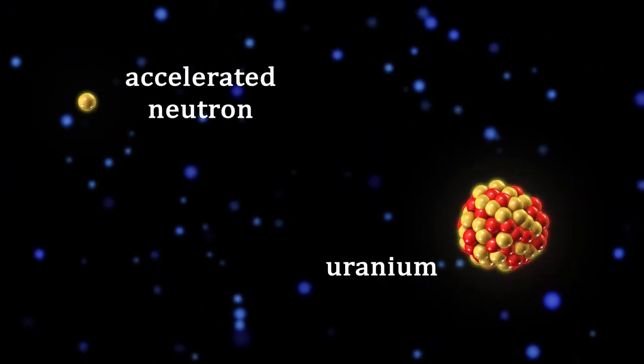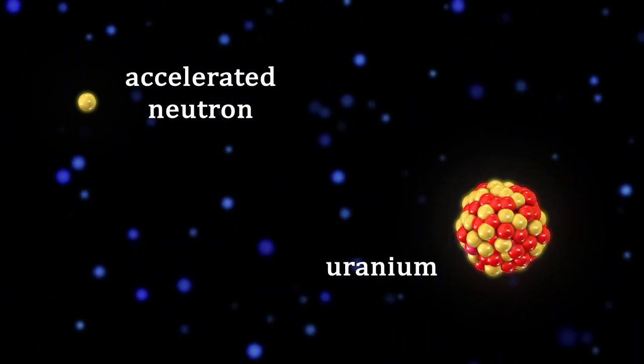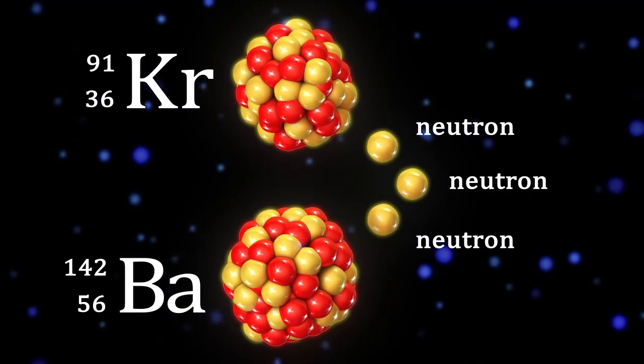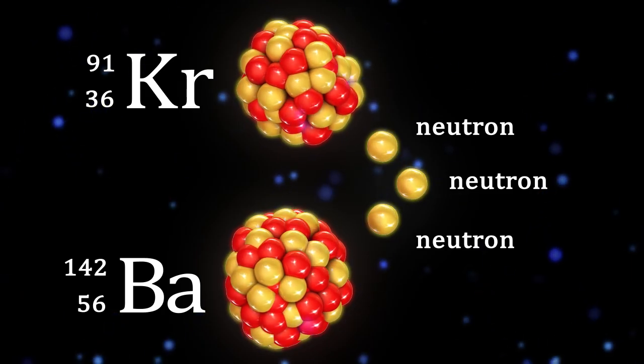The fission of uranium-235 is initiated when a neutron traveling with enough velocity collides with the uranium-235 nucleus. The collision produces U-236.